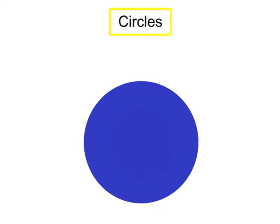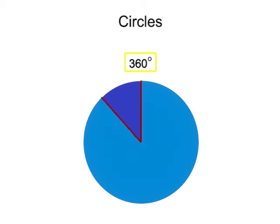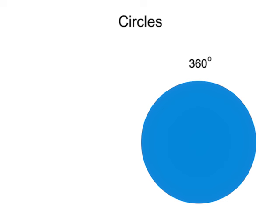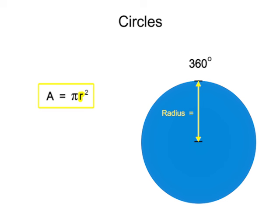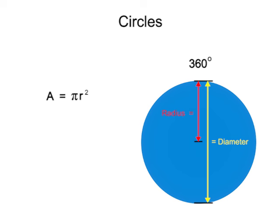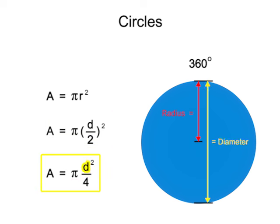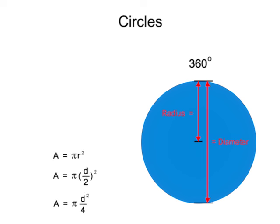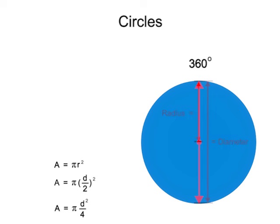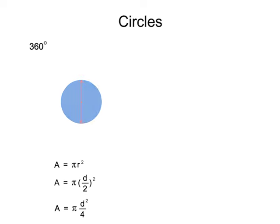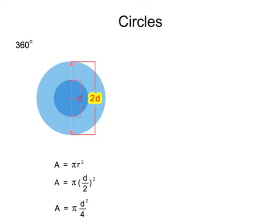Circles also have unique characteristics. Circles have a total of 360 degrees. Their area can be found by the formula A equals pi times the radius squared. Many times, circles are defined by their diameter, in which case the area is equal to pi times the diameter squared divided by 4. In manufacturing, it's important to know how changes to the diameter affect the area of a circle. If the diameter of the circle is doubled, what will that do to the area?